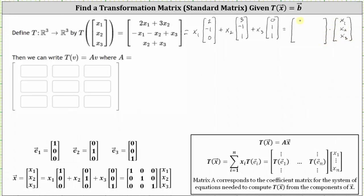This means we can write the output vector or the image as a product of a three by three matrix and vector x, where the first column of the three by three matrix is (2, negative one, zero), the second column is (3, negative one, one), and the third column is (0, one, one). So now that we have the image in this form, we know matrix A must be this three by three matrix for this transformation.